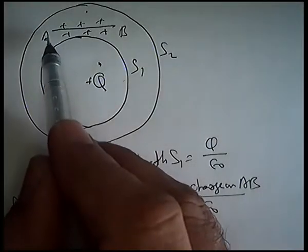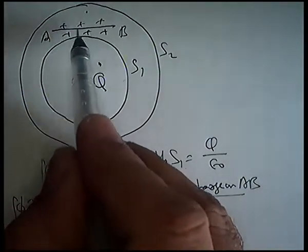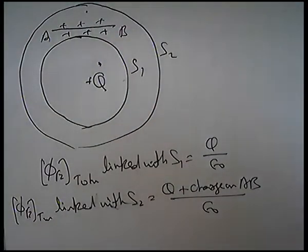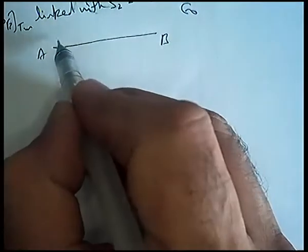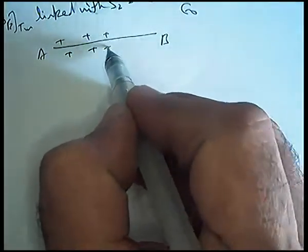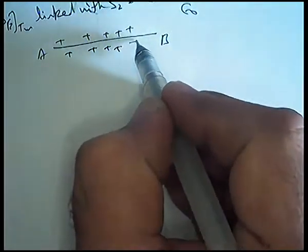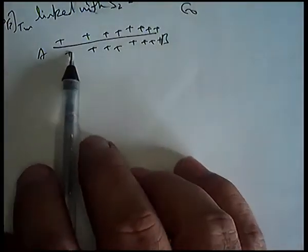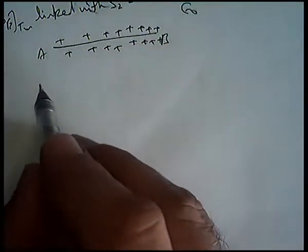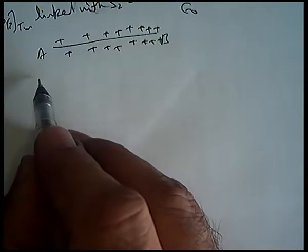अब ध्यान से देखिए — AB uniformly charged नहीं है. इस पर linear charge density लगातार increase होती चली आ रही है, यहाँ हल्का charge है. Charge density given by lambda equals kx, where x is the distance from end A.